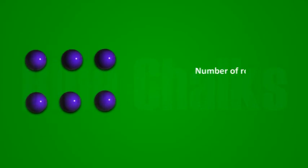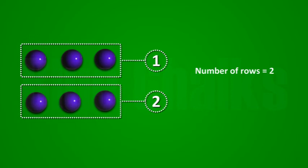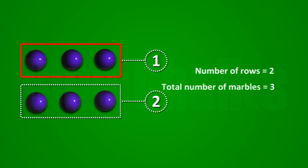Three marbles in each row. Number of rows is equal to two. Total number of marbles is equal to three into two is equal to six.